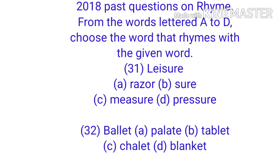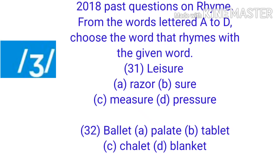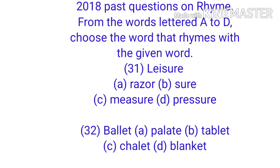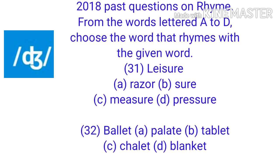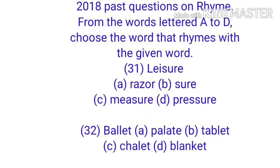Going back to the options: Option B is 'sure'. The sound in 'sure' does not sound alike with the ZH in the given word, so they don't rhyme. Option C is 'measure' — this is the correct answer; it has the same sound as the given word. Option D is 'pressure', where the last syllable is pronounced SH, not ZH.